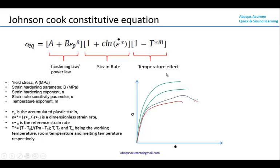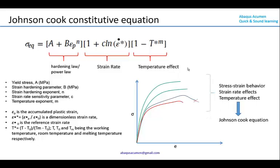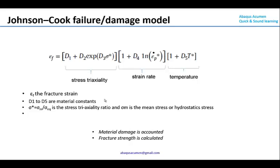The last term accounts for the temperature effect. At elevated temperatures, the metal becomes softer, and the stress-strain curve differs compared to the normal speed and high-speed curves. We can account for this behavior using this particular term. In summary, the Johnson-Cook model accounts for all three effects in one equation: the normal stress-strain behavior using the power law, the strain rate effect, and the temperature effect, with proper representation of the material constants.